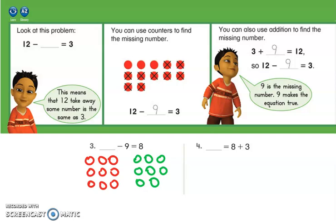So I know that if I have 17 and I take away 9, I have 8 left. That is how I'm going to solve it.